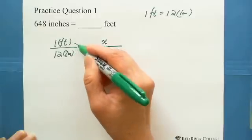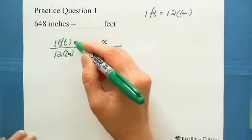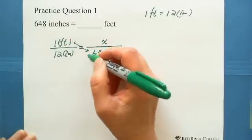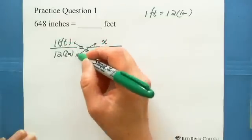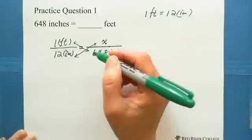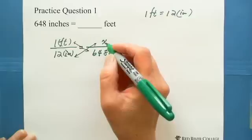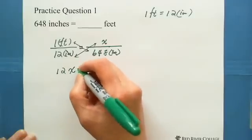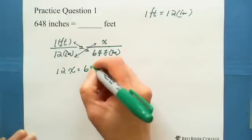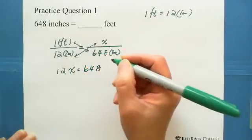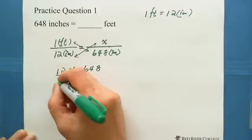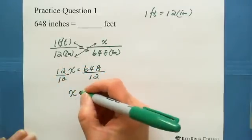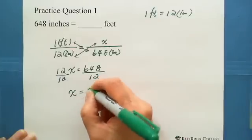So cross multiplication, cross the equal sign, multiply top number with bottom number on the other side. We have x times 12 equals 1 times 648, still 648. Then divide 12 for both sides. You got x equals 54 feet.